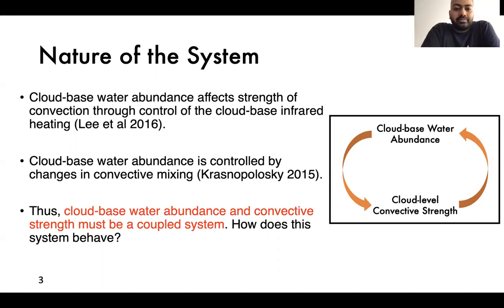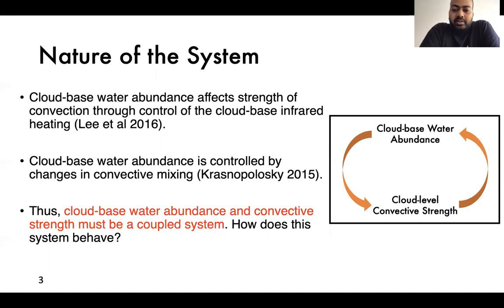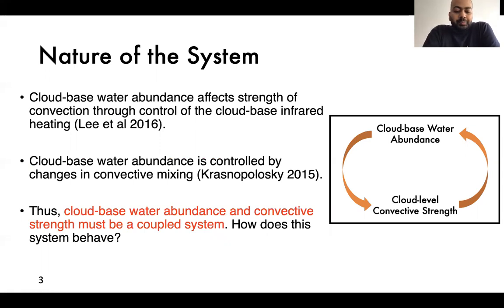The more water you have, the less heating you have. The second relevant study is the chemical modelling study by Krasnopolsky in 2015, who looked at this coupled system of water, sulfur dioxide and sulfuric acid within the clouds, and examined the effects of changes in vertical mixing through the eddy diffusivity on how the abundances of water and sulfur dioxide vary at different vertical levels.